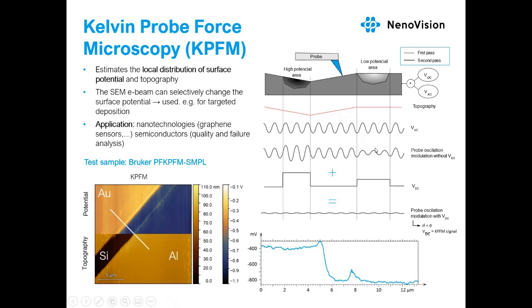One application is in-situ detection of selectively changed surface potential by the electron beam, used for targeted deposition in nanotechnologies or the semiconductor field. Shown here is a test sample of gold, silicon, and aluminum from Bruker, and a potential graph along the white line visible in the image.